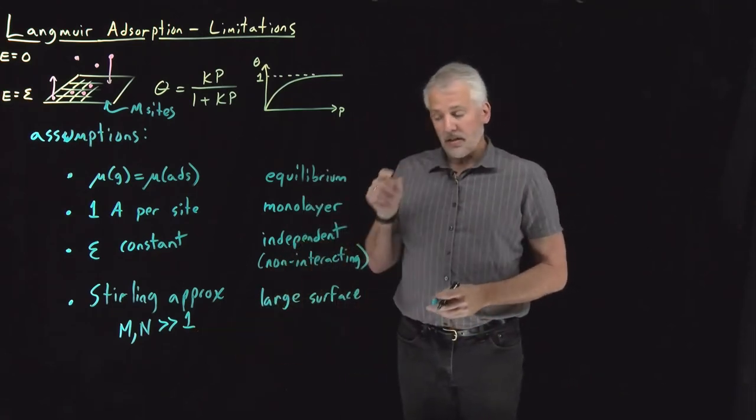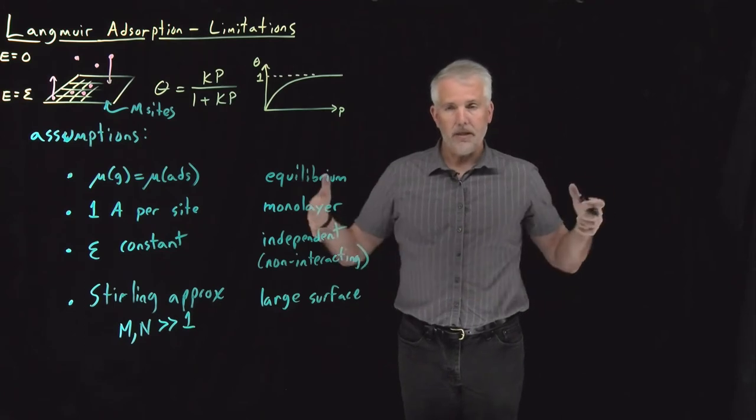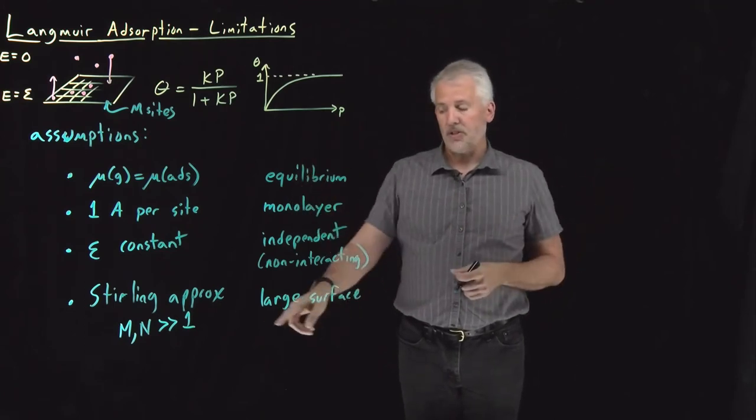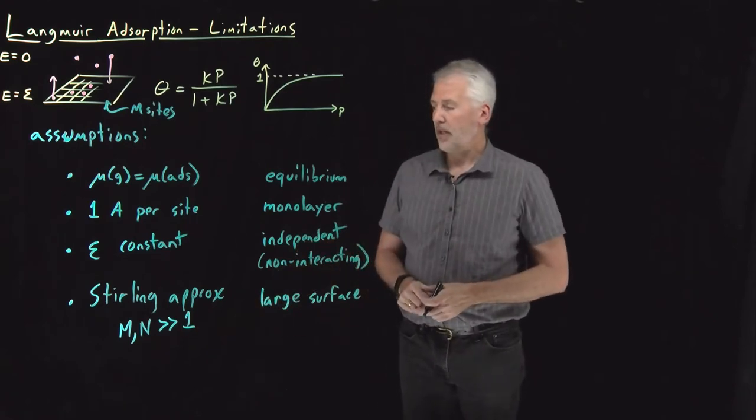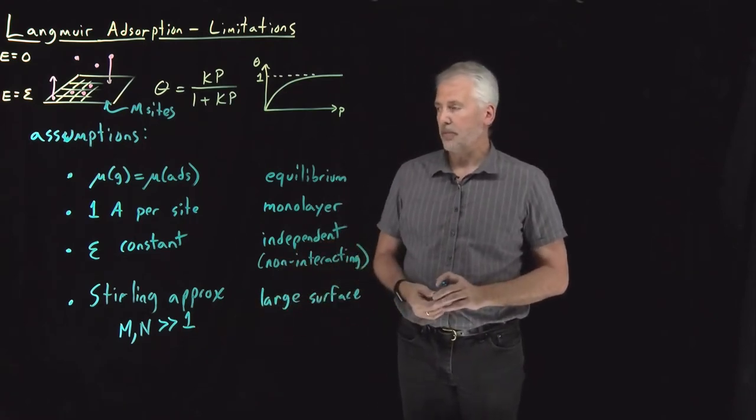Large just means the number of binding sites larger than one. So since the binding sites are small and molecularly sized, it doesn't have to be macroscopically super large. It just has to be large enough to hold many molecules, which is often not a terribly stringent approximation.